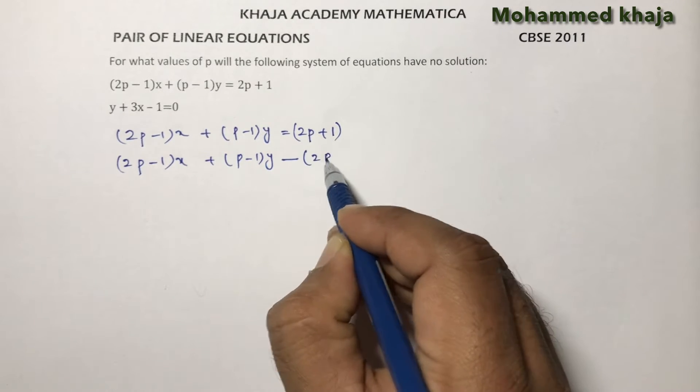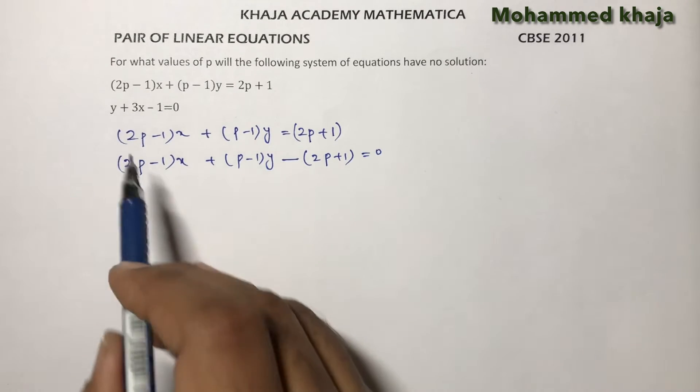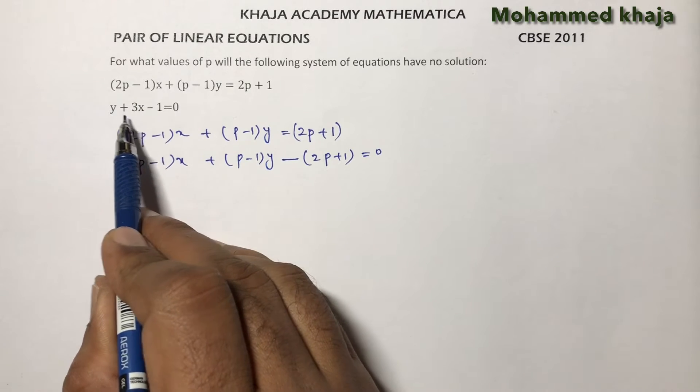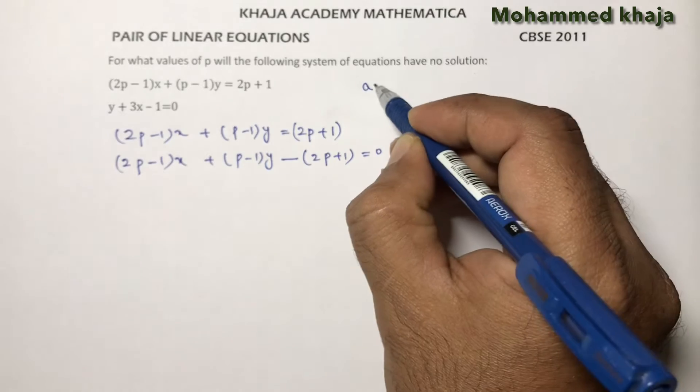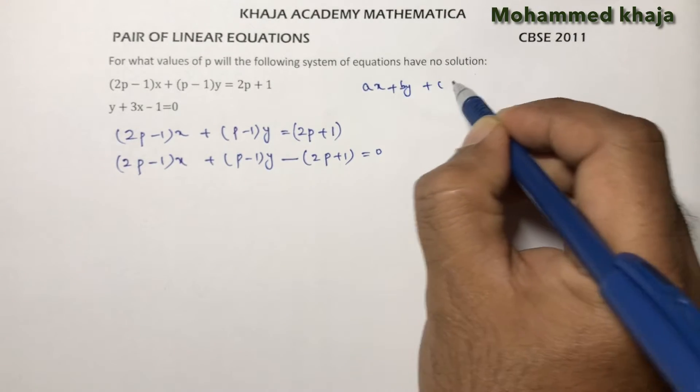And the second equation, if you observe, is not in standard form. First write x, then y, then constant, because the standard form of an equation is ax + by + c = 0.